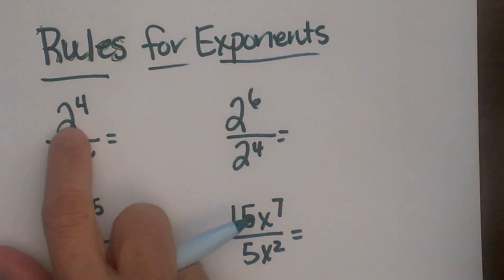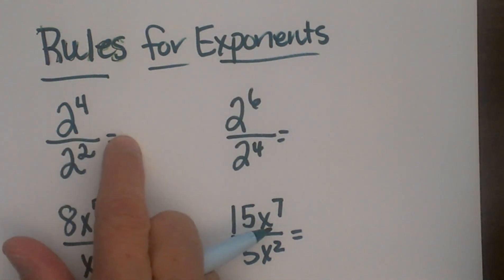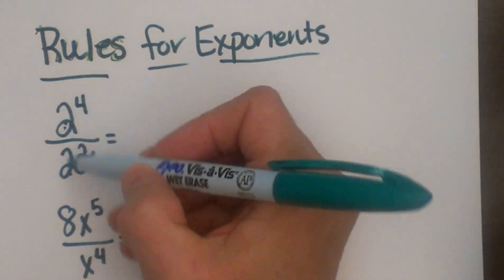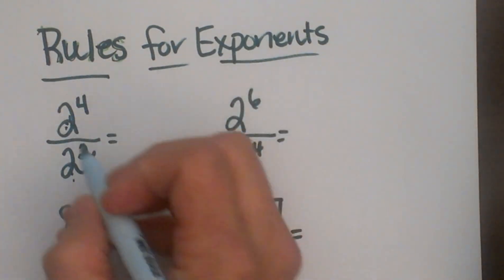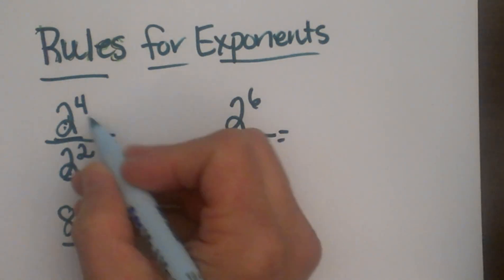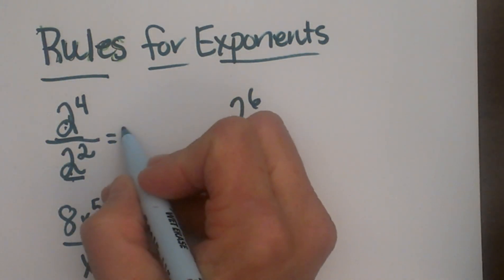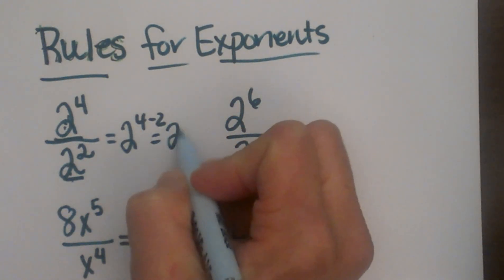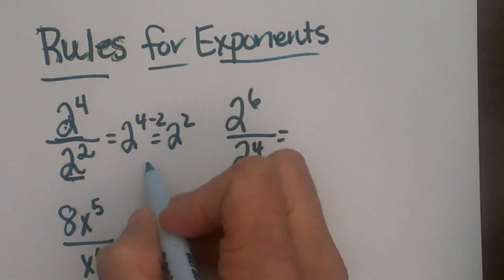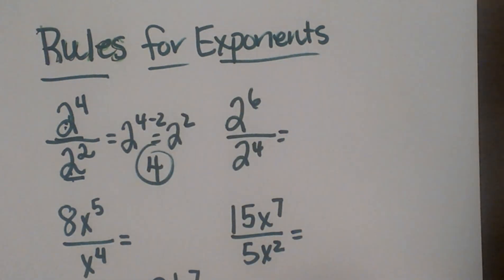Here we have 2 to the 4th power divided by 2 to the 2nd power. Since we have like bases and both of these are integers, we just subtract our exponents. So you're really just looking for like bases. With like bases we take 2 to the 4 minus 2, which is 2 squared, and that simplifies to 4 if you need an integer answer.